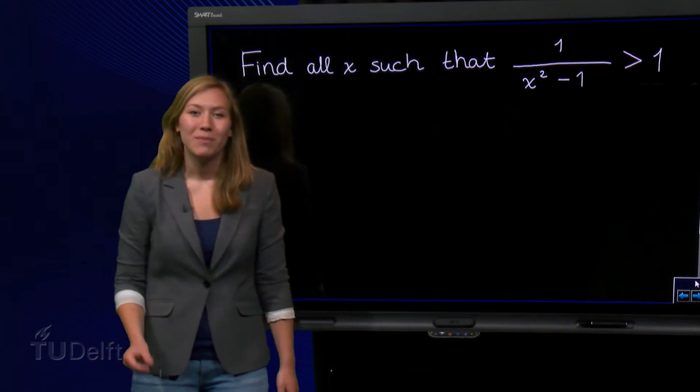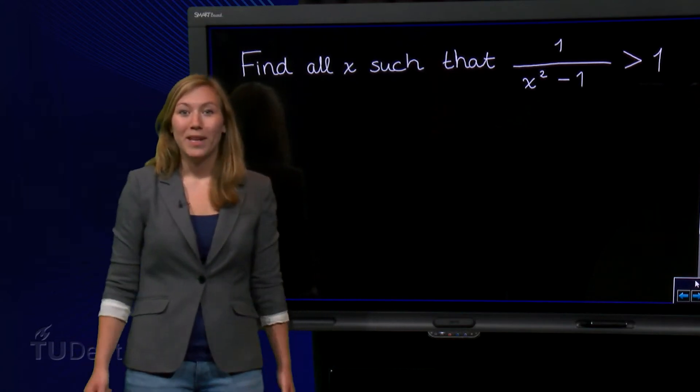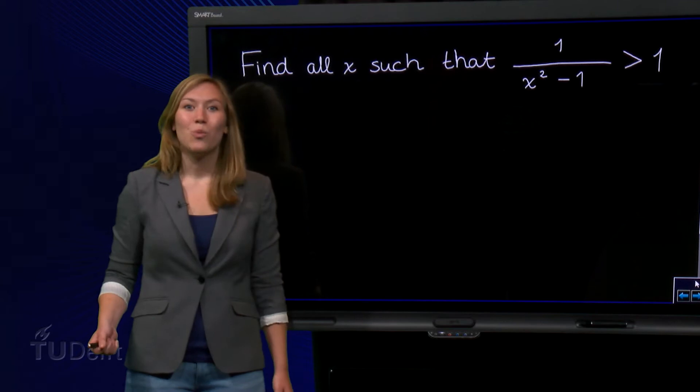Let's solve the following inequality. 1 over x squared minus 1 is larger than 1.